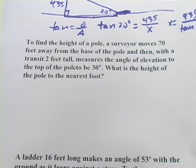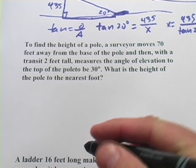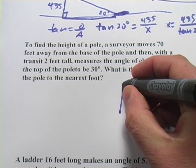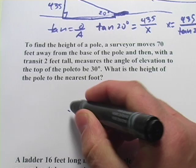This next one says, to find the height of a pole, a surveyor moves 70 feet away from the base of the pole. So let's make the pole here. There's our pole. And then the surveyor moves 70 feet away. So here's our surveyor.